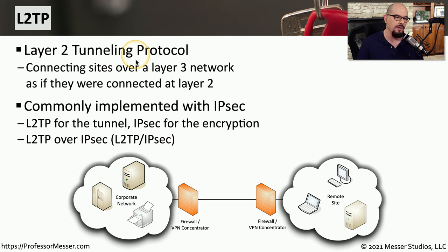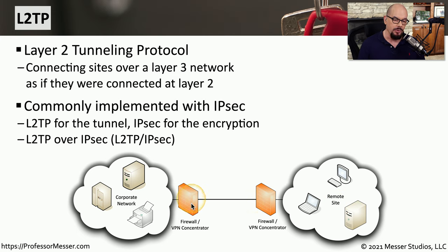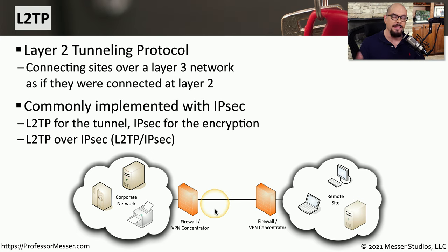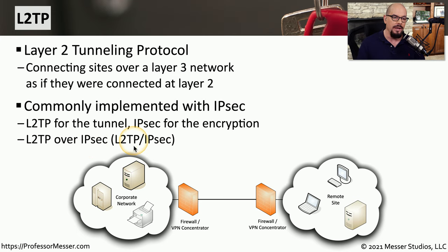L2TP is Layer 2 Tunneling Protocol. This means we're connecting two networks together as if they are on the same Layer 2 network, but we're connecting them through a Layer 3 network to perform that function. This is commonly used in conjunction with IPSec networks, so you would use L2TP for the tunnel between sites and then add IPSec for the encryption capabilities. You'll sometimes see those referred to as L2TP over IPSec, or L2TP/IPSec.